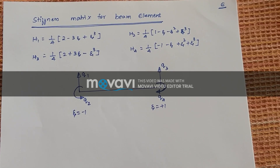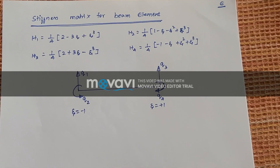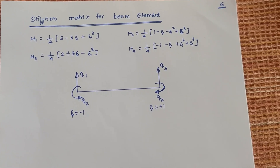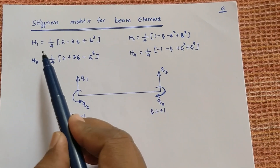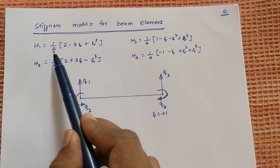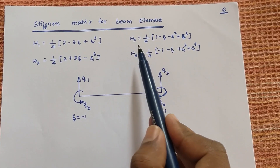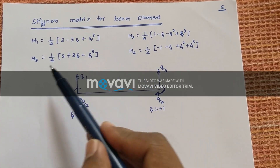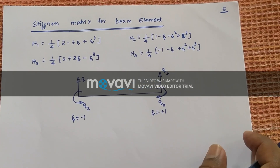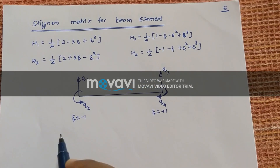Hi, I am Arjun. In this session, we will learn how to solve the stiffness matrix for a beam element. We know that from the basic shape functions for a beam element, H1 is 1 over 4 into 2 minus 3 zeta plus zeta cube. Similarly, H2, H3, H4 — we know these basic equations. Now we will write the basic formulation for this.